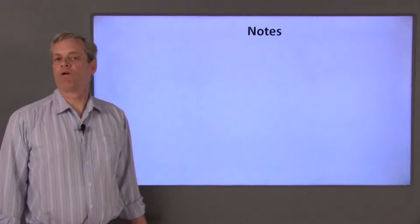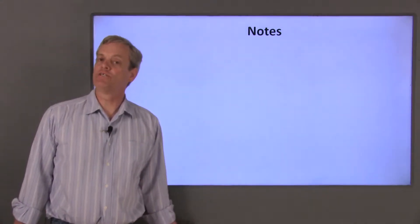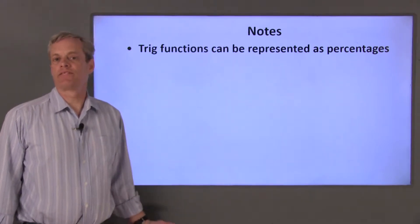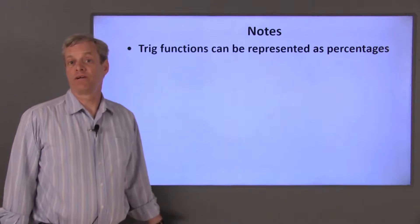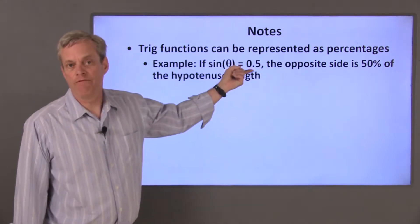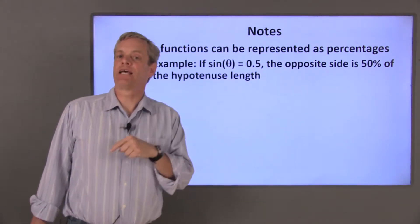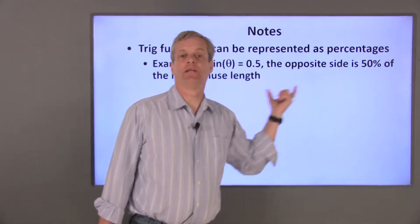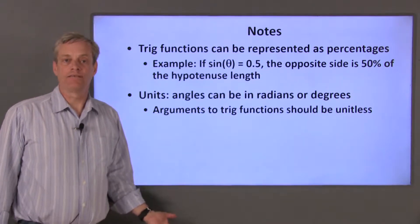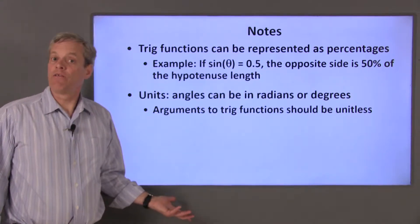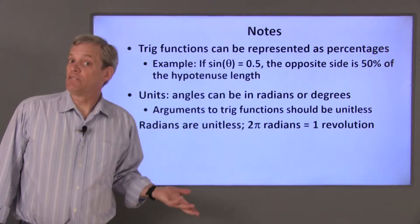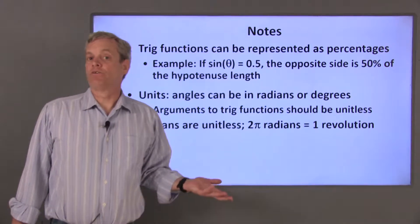There are a few comments I want to make before we move on to defining trig functions in terms of a unit circle. Trig functions are ratios between the lengths of the sides of a triangle, which can also be expressed in terms of percentages. For example, if the sine of an angle is 0.5, the length of the opposite side to that angle is 50% of the length of the hypotenuse. The units of angles are expressed either in degrees or radians. The argument to a trig function, theta, should have no units. Radians have no units, so strictly speaking mathematically, units of angles should be in radians.